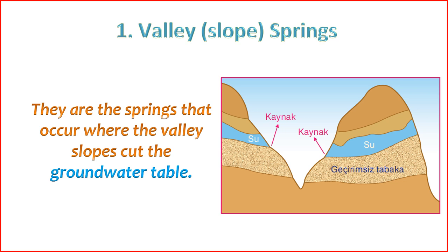4. Seasonal Variability — the flow of valley slope springs can be influenced by seasonal changes in precipitation. During periods of higher rainfall, the groundwater table may rise, leading to increased spring flow. 5. Flow Characteristics — valley slope springs may exhibit variable flow rates, depending on factors such as groundwater recharge, local hydrology, and the presence of fractures or conduits in the subsurface.